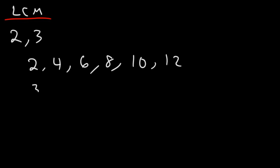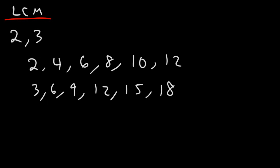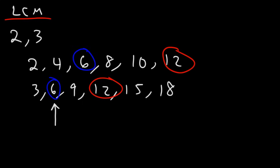Multiples of three are three, six, nine, twelve, fifteen, eighteen, and so forth. You just have to keep adding three. Now looking at these two lists of numbers, which one contains a common multiple? Six is a common multiple of two and three, and twelve is also a common multiple. Now which of these represents the least common multiple? Six is going to be the least common multiple — it's less than twelve. So the LCM of two and three is six.